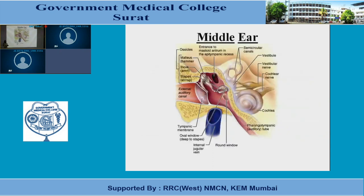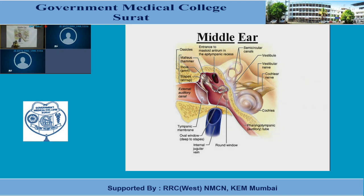The middle ear is an air-filled chamber. The outer wall of the middle ear is the tympanic membrane, and on the opposite wall there is an oval window and a round window, which are covered by membrane. Transmission of sound from the external ear to the internal ear occurs through the middle ear and is transmitted through the oval window. The lateral border of the middle ear is bounded by the tympanic membrane. It consists of three ossicles — malleus, incus, and stapes — and it contains two muscles.